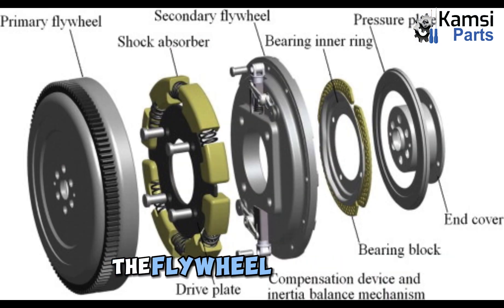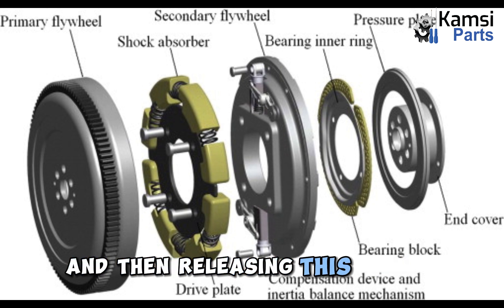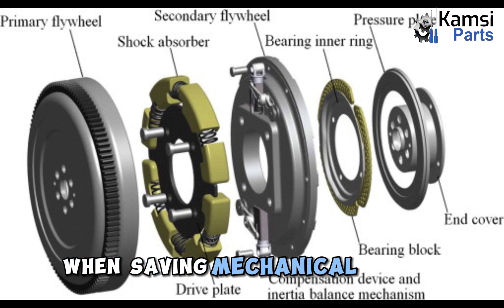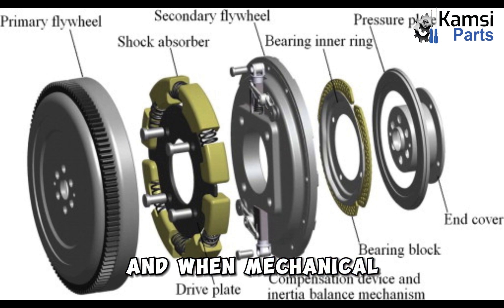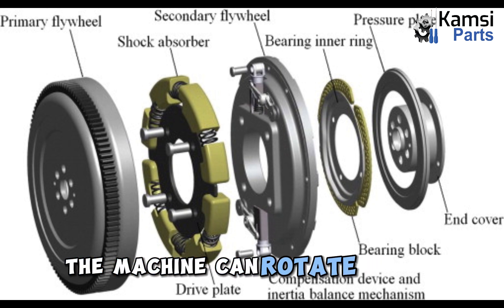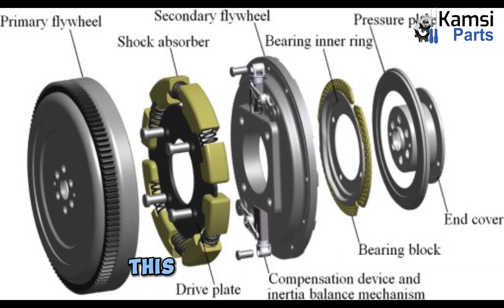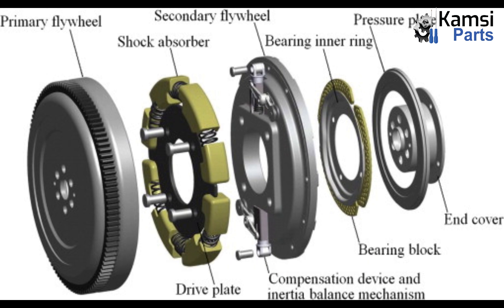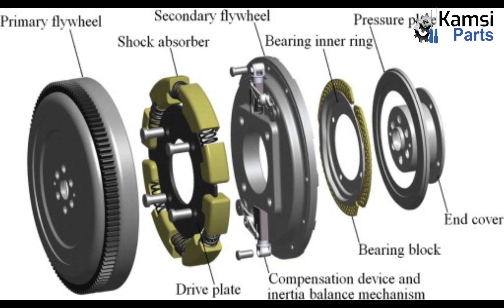How flywheels work: The flywheel works by storing mechanical energy generated by torque and then releasing this energy by rotating the engine. When saving mechanical energy, the engine speed will increase, and when mechanical energy is released, the stability of the engine speed will be maintained properly. Mechanical energy is transferred to the flywheel via torque, causing an increase in rotational speed, which allows energy to be stored. Conversely, when the flywheel releases stored energy, it rotates the mechanical load to maintain the stability of the engine's rotation.